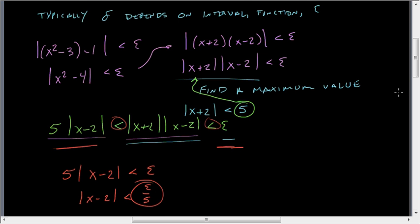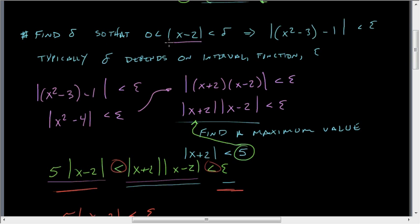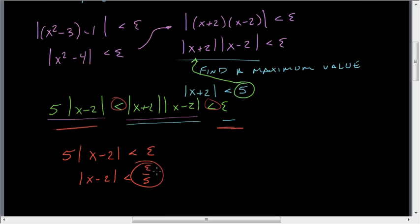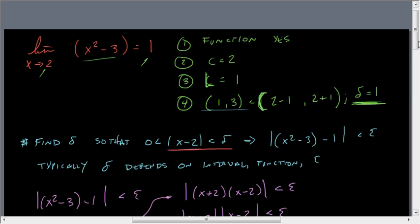But wait. Isn't that what we want? So now, delta takes on this thing. If this is equal to delta, now we have delta is equal to epsilon over 5, or, from our assumption on our interval, delta equals 1.